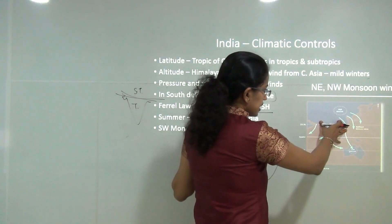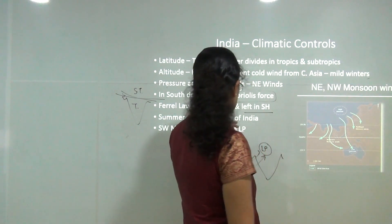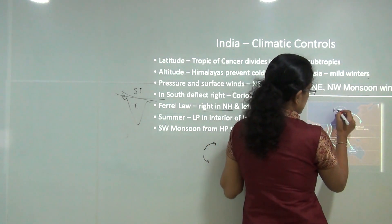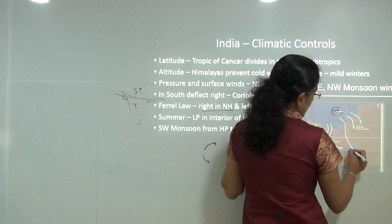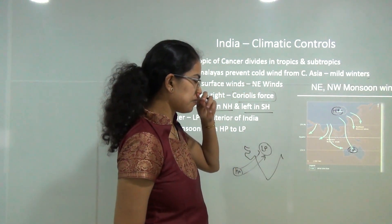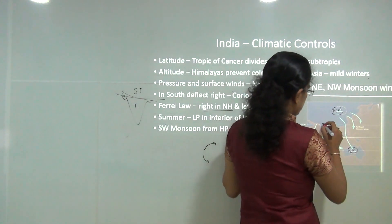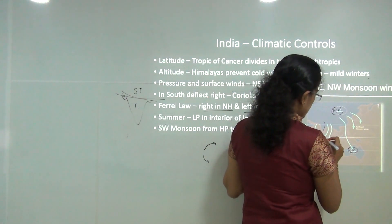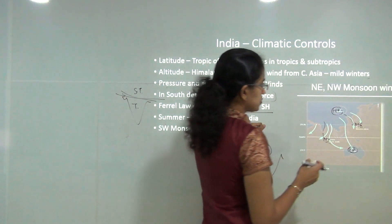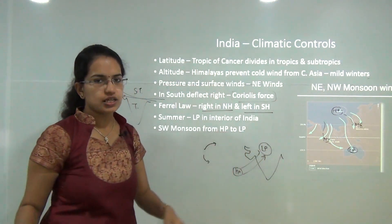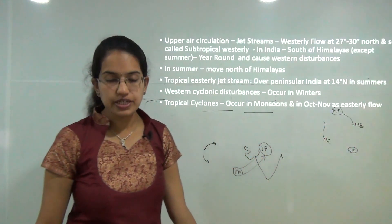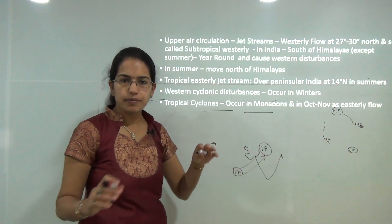In the case of the southwest monsoon, winds move towards the low pressure over India. However, for the northeast monsoon, there is high pressure over mainland Asia compared to low pressure over Australia, and winds flow from high to low pressure. The north-east monsoon causes the retreating monsoon and winter rainfall on the coast of Tamil Nadu.